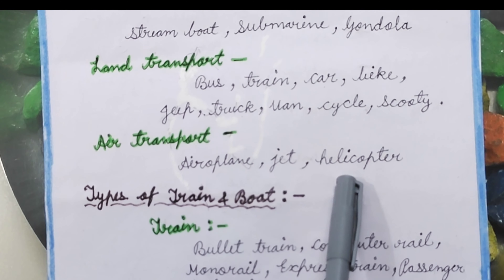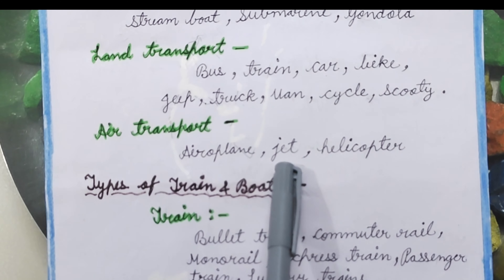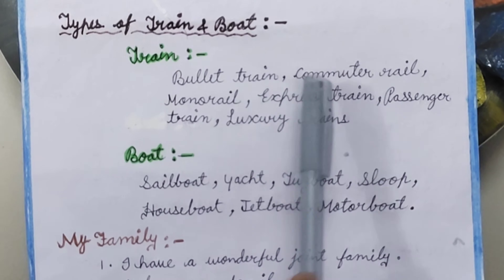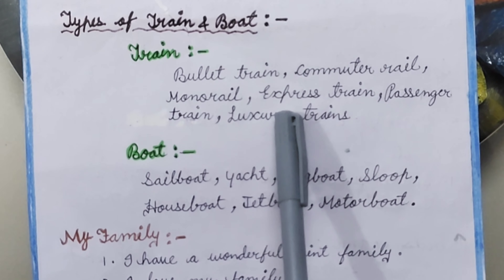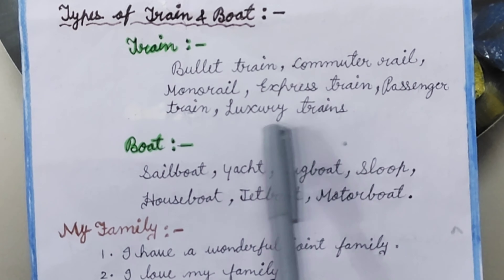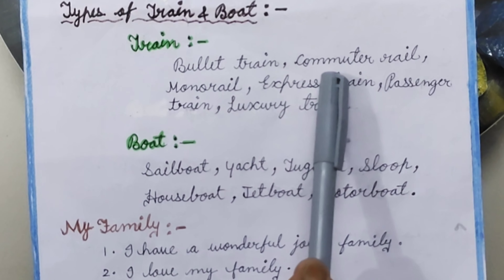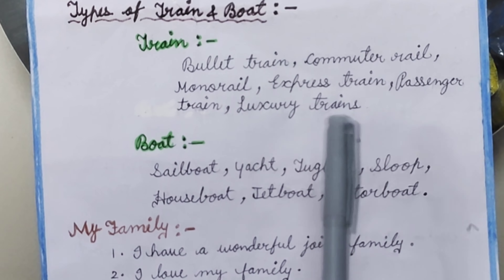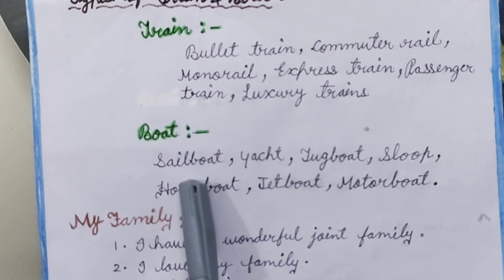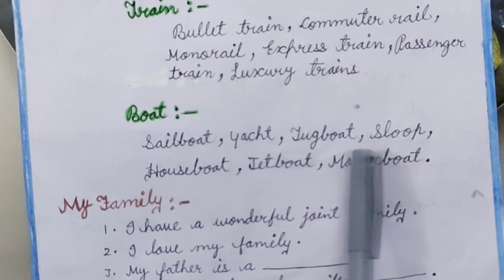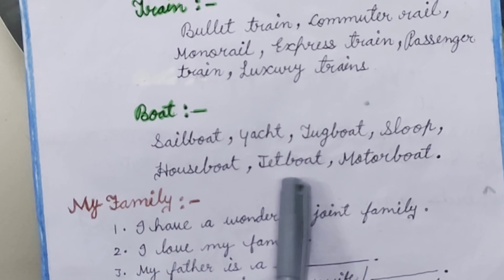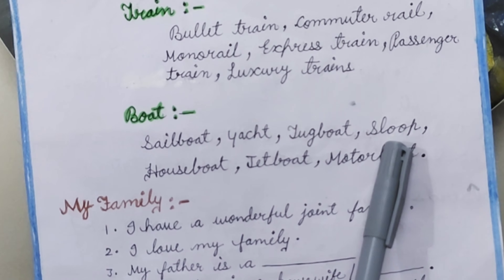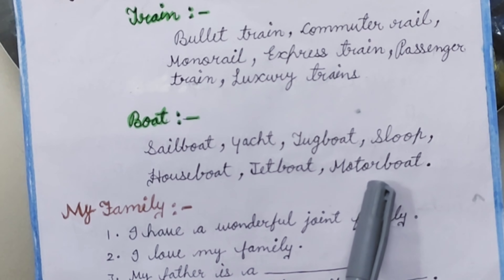Air transport: Aeroplane, Jet, Helicopter. Types of Train: Bullet Train, Commuter Rail, Monorail, Express Train, Passenger Train, Luxury Train. Types of Boat: Sailboat, Yacht, Tugboat, Sloop, Houseboat, Jackboat, Motorboat.